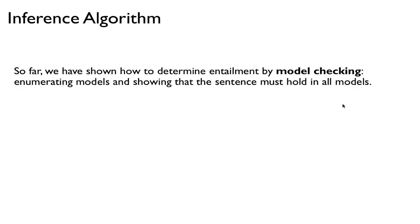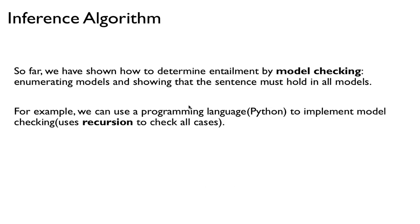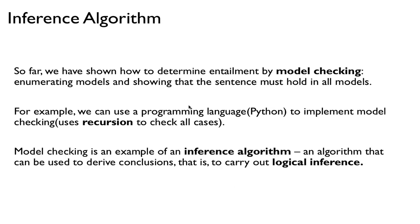So far we have shown how to determine entailment or logical implication by model checking — basically enumerating all possible models, looking at all rows of the truth table, and then checking to see which of those assignments satisfy the implication. You can use a language like Python to implement model checking using recursion to check all possible cases. It's just a brute force approach, but model checking is an example of an inference algorithm — one that can be used to derive conclusions or carry out logical inference.